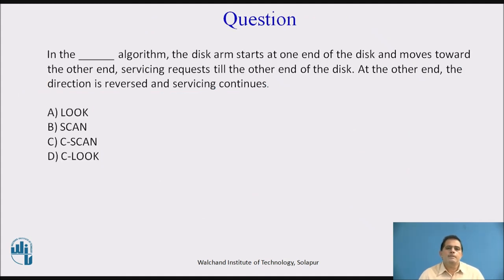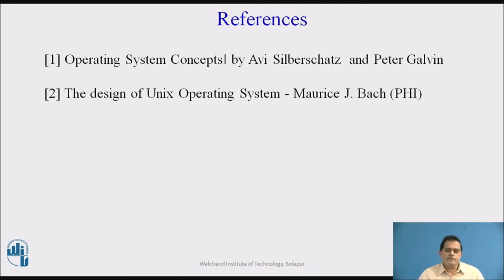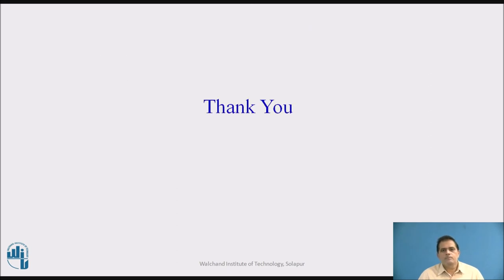Question: In which algorithm does the disk arm start at one end of the disk, move toward the other end servicing requests, then at the other end reverse direction and continue servicing? Options: A) SCAN, B) SCAN, C) C-SCAN, D) C-LOOK. The answer is B — SCAN algorithm. These are the references from where the points have been taken. Thank you.